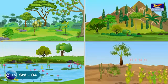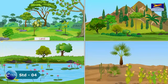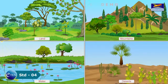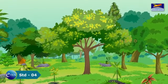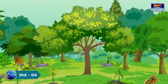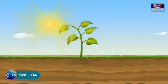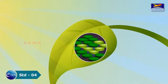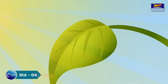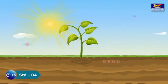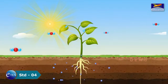Plants are seen almost everywhere. They grow on land, on mountains, in deserts, and underwater. You find different plants with different types of green leaves. Why are leaves green? They are green due to the presence of chlorophyll. Only green leaves can prepare their own food in the presence of sunlight, air, and water.